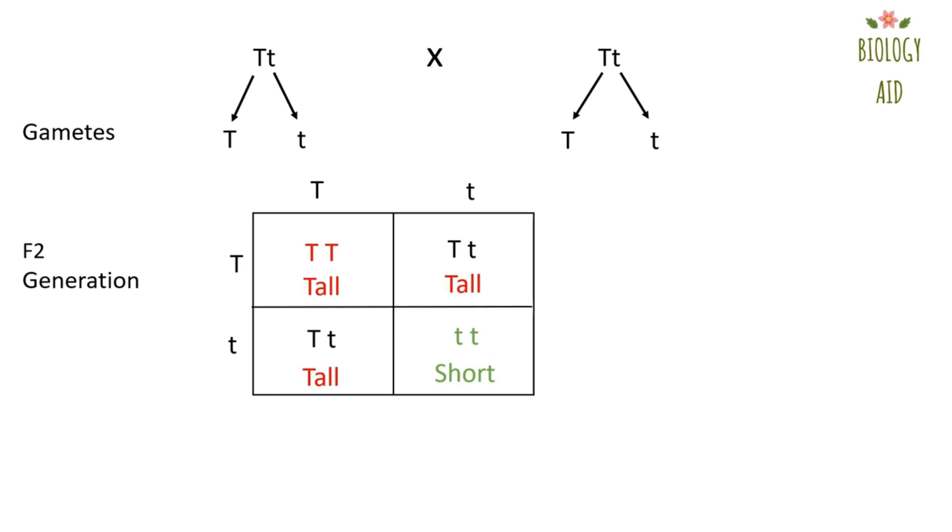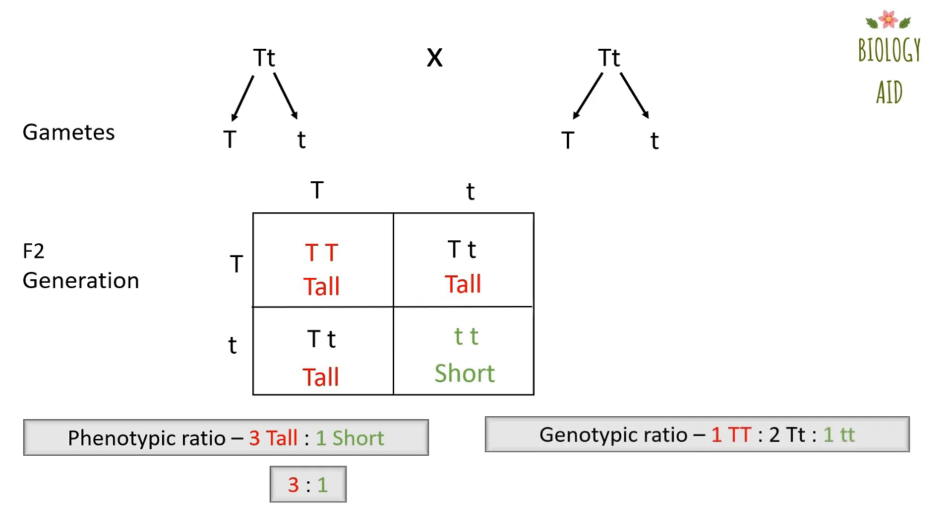Now, if it is asked, what will be the phenotypic ratio of F2 generation in Mendel's monohybrid cross? We'll say 3 tall ratio 1 short, which means the ratio will be 3 is to 1. Similarly, if it is asked, what will be the genotypic ratio? Then we'll say 1 capital T capital T ratio 2 capital T small t ratio 1 small t small t. So the genotypic ratio will be 1 is to 2 is to 1.